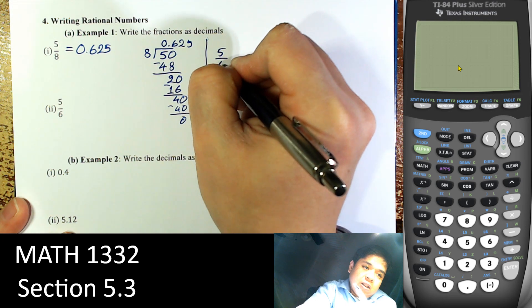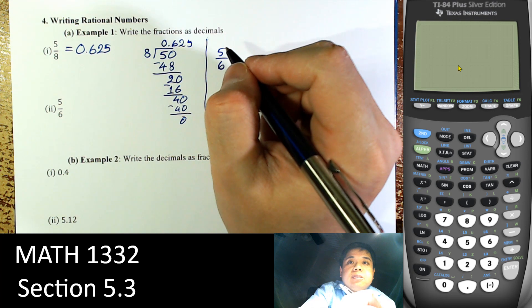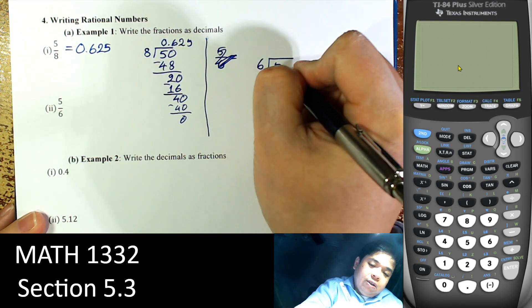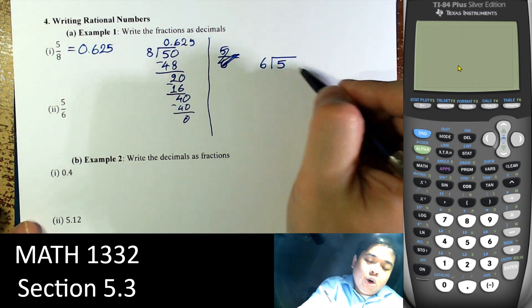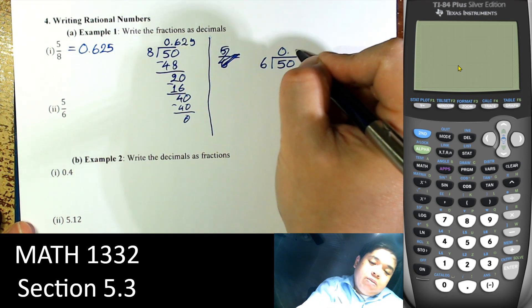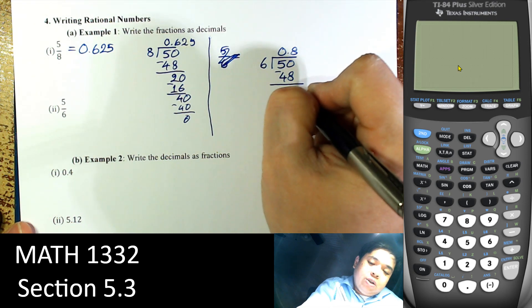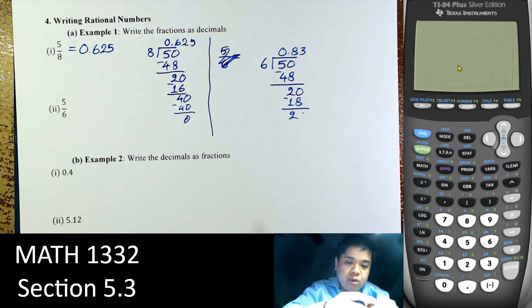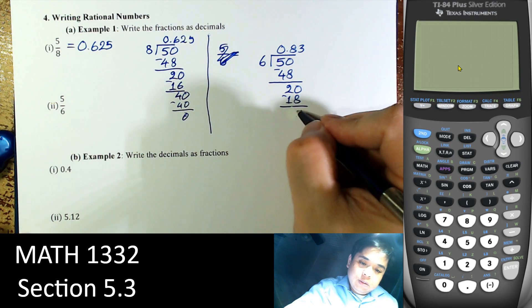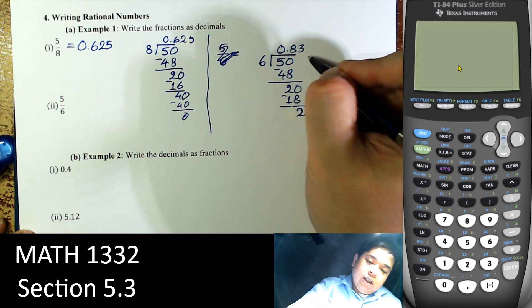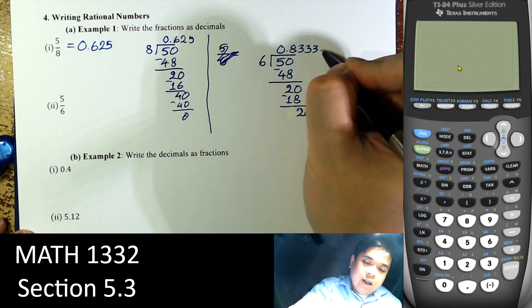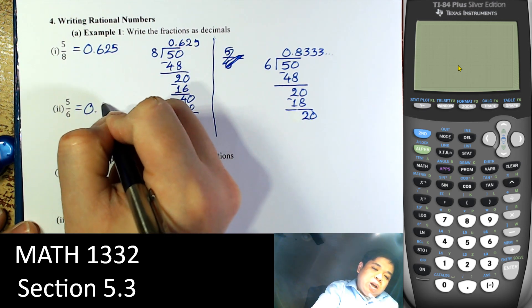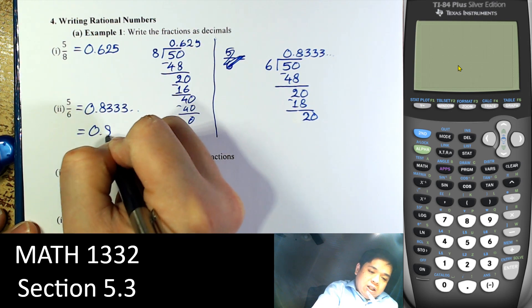Now 5 divided by 6: 6 goes into 5 zero times. Carry a zero: 6 goes into 50 eight times; 8 times 6 is 48, subtract to get 2. Carry a zero: 6 goes into 20 three times; subtract to get 2 again. As you see, it just keeps going — always remainder 2, so 6 goes into 20 three times again. That gives us 0.8333 repeating, or 0.8 with the 3 repeating.